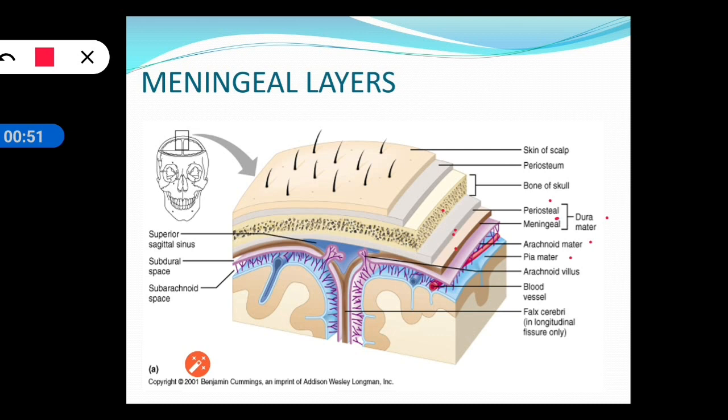In between the dura mater and the arachnoid mater there is a space called the subdural space. The contents of the subdural space are a thin layer of capillary fluid and also veins which are on their way to drain into the dural venous sinus. So any bleeding which occurs in the subdural space is venous.